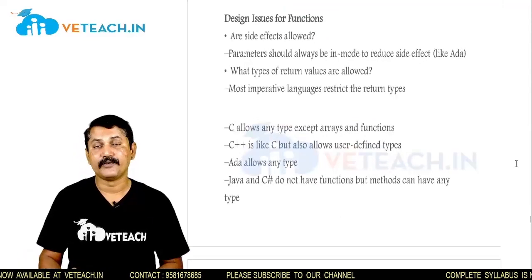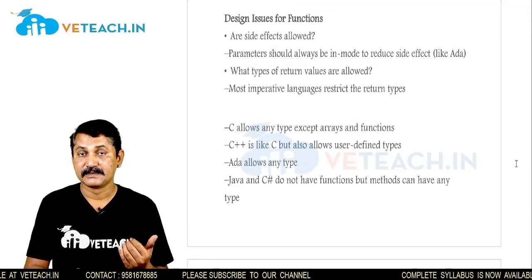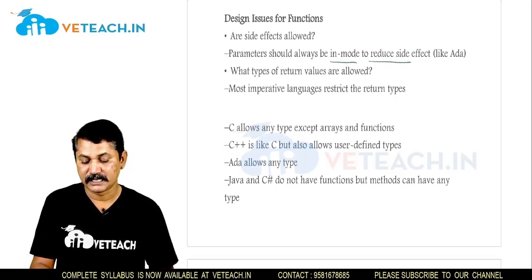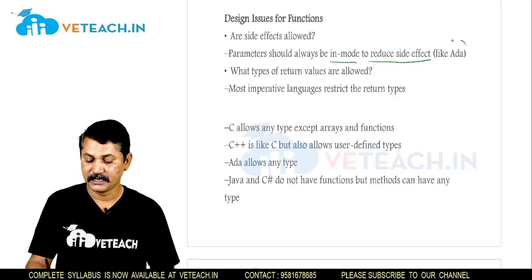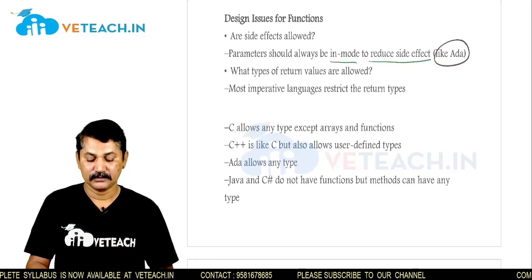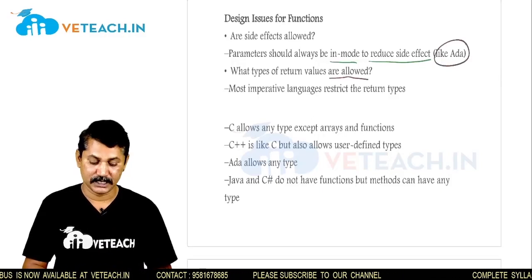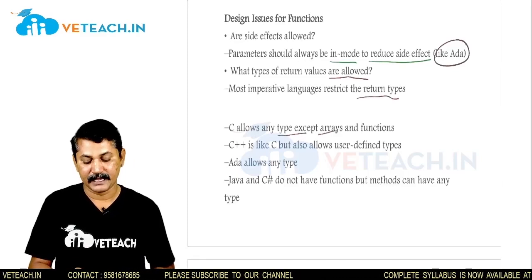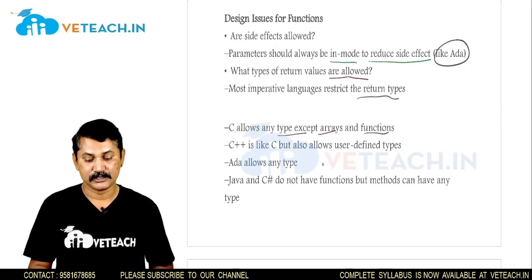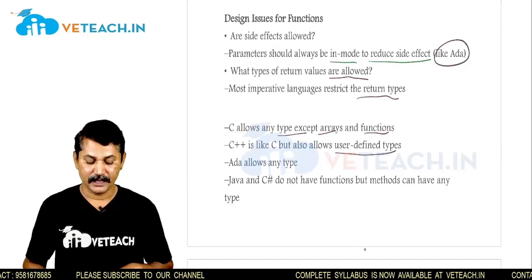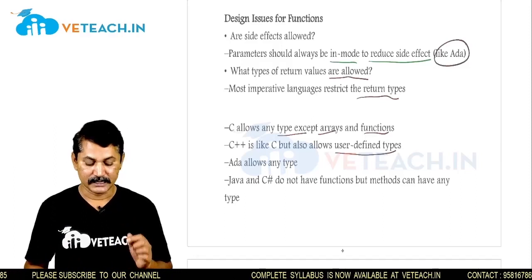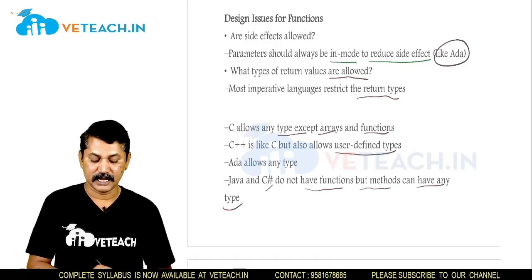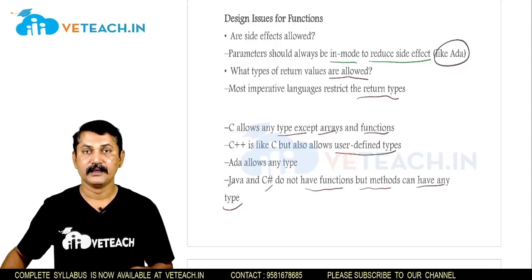Regarding the design issues of functions, there are side effects to consider. Parameters should always be in-mode to reduce side effects, as in ADA. We must also consider what types of return values are allowed at the time of function declaration. Most imperative languages restrict return types; C allows any type except arrays and functions; C++ is like C but also allows user-defined types; ADA allows any type; and Java and C# do not have functions but use methods as subprograms.